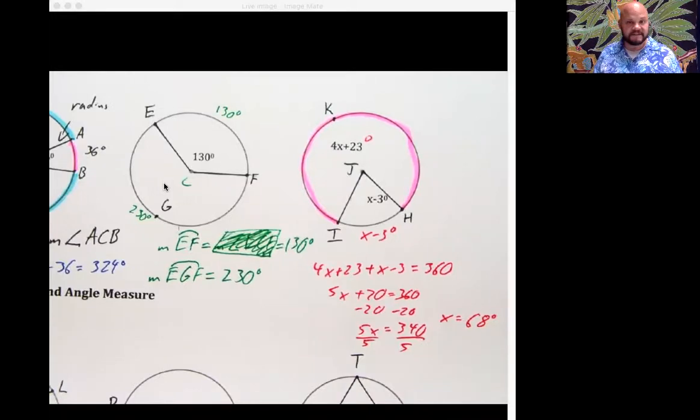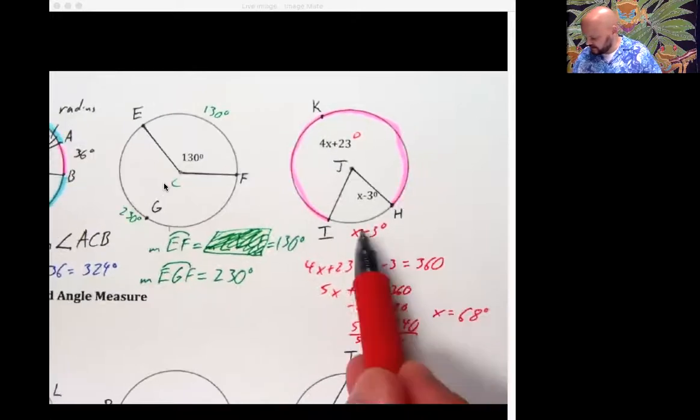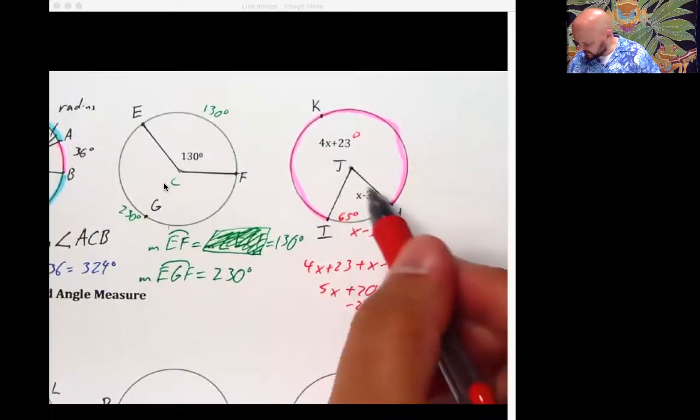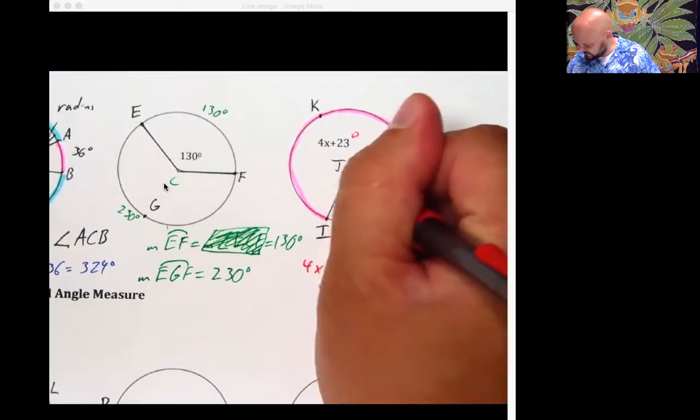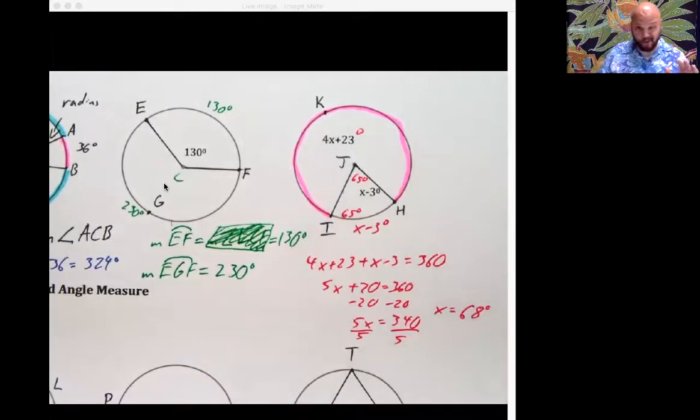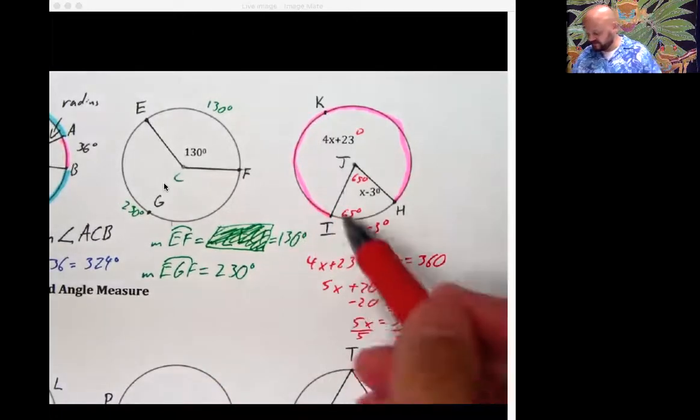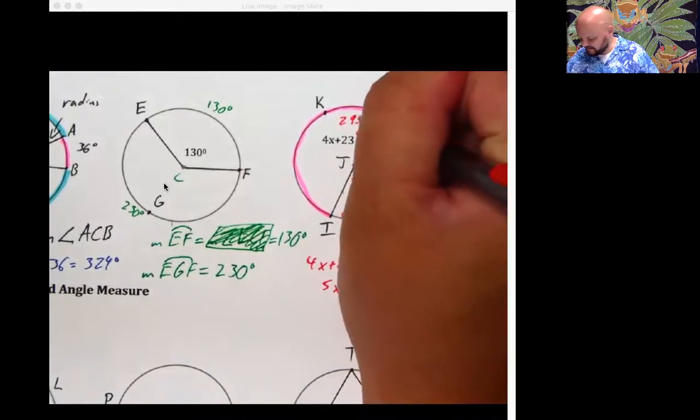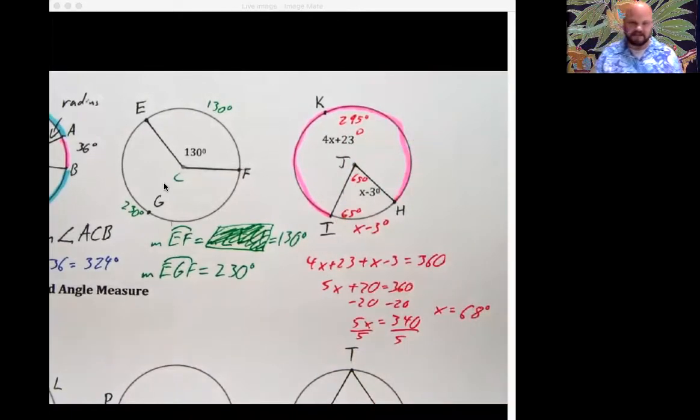But how big are the arcs and the angles and whatnot? We just plug it back in. 68 minus 3 is 65. So both of this arc measure and this angle are going to be 65. And this leftover piece, I could plug in 68 times it by 4 and add 23. Or I could just subtract 65 from 360, which would give me 295.